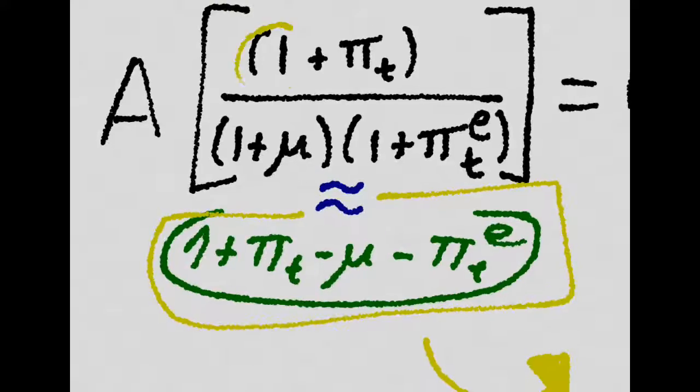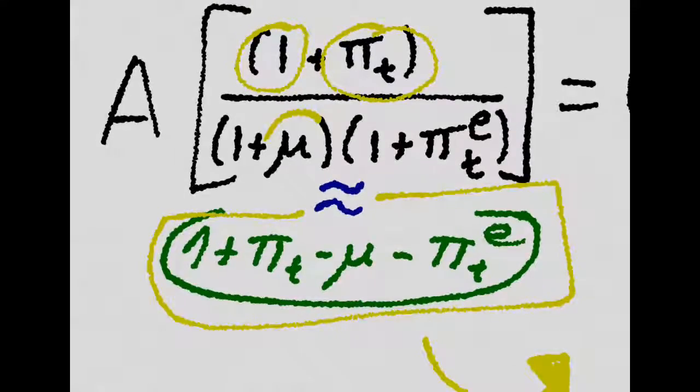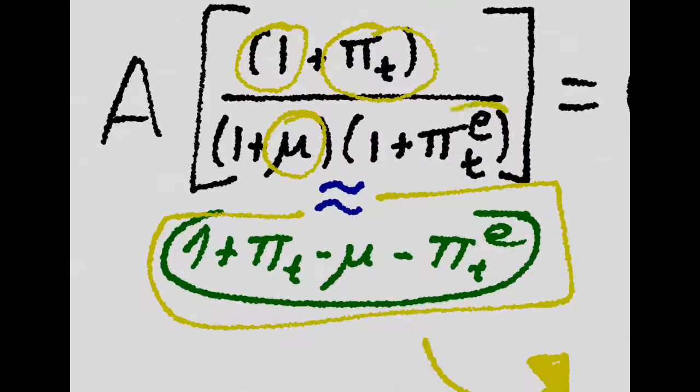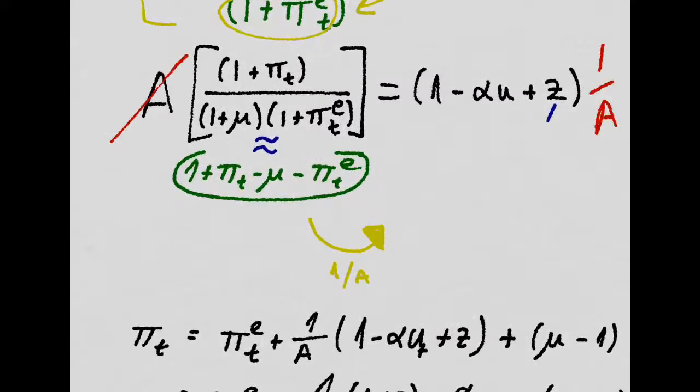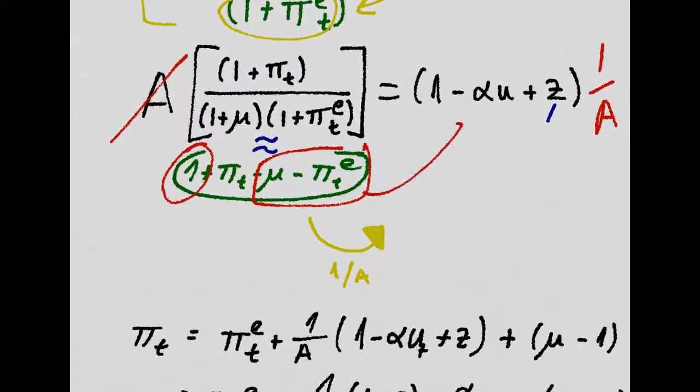We just take this plus this, minus this, minus this. We take this A, divide them to the other side, and we take this, and we take this, this and this, there, afterwards.